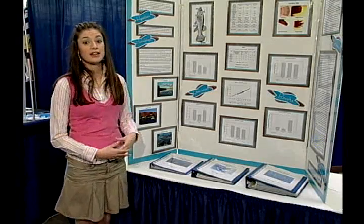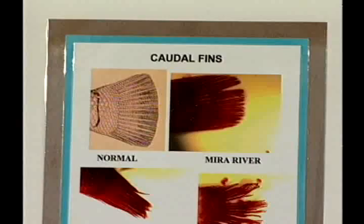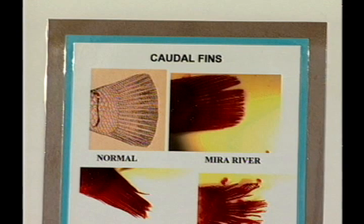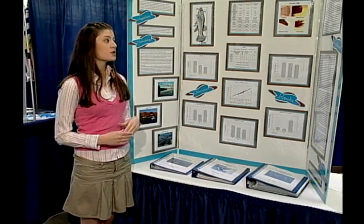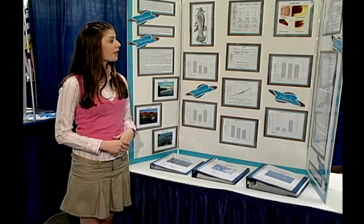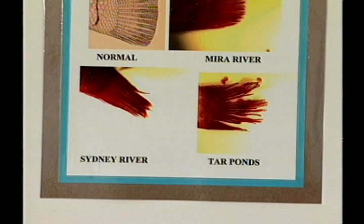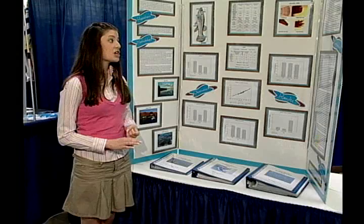The next and final analysis that I looked at was a general subjective caudal fin analysis. The normal caudal fin ray of a mummychog has straight caudal fin rays and they're fanned, which closely resembles that of the Myra River caudal fin rays. There are also the Sydney River caudal fin rays, which are straight but tightly banded together. And the Sydney Tarpons caudal fins are very damaged and even deformed. So again, you can rate the estuaries: Myra River would receive a 3, Sydney Tarpons would receive a 1, and Sydney River would receive a 2.